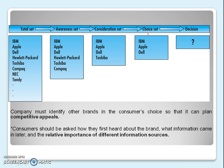From the consideration set, you collect detailed, in-depth information on product features, quality, price, and various other factors. Then you make a choice set, from which you will take a final decision. The choice set contains brands that are very competitive — having almost equal features, equal prices, and equal services and warranties.